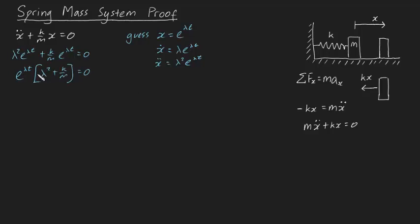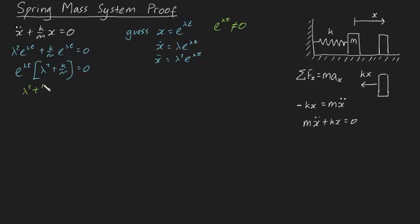So it seems we can go down two routes — either e to the lambda t equals zero, or this bracket must equal zero. But notice, e to the lambda t can never be equal to zero. Which means we've only got one option: lambda squared plus k over m must be equal to zero. And if you solve for lambda, that means lambda must be equal to plus or minus the square root of minus k over m.